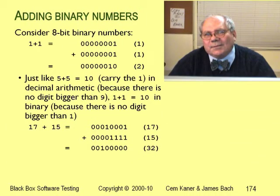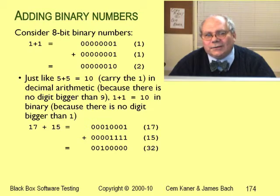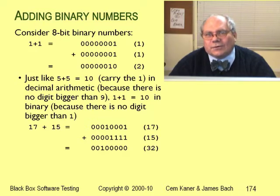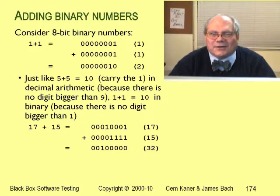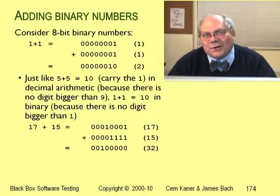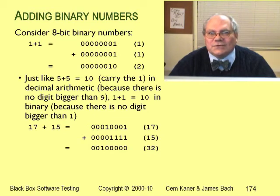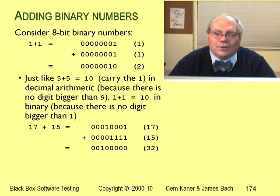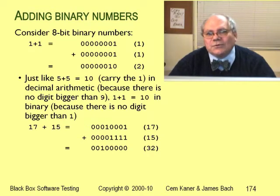We can add binary numbers just like we added decimal numbers, except that we overflow a lot more quickly. In decimal, 5 plus 5 is 10. In binary, 1 plus 1 is 10 — we call that 2. We can also write this as 00000010, which is how we show 2 within an 8-bit binary number.